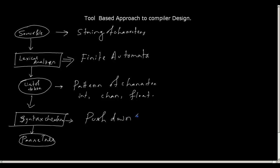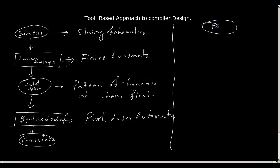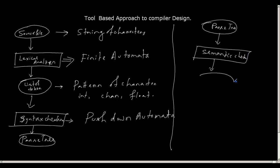As soon as you get a token, you know in which state you should be. We will discuss this further after the lexical analyzer topic. From the parse tree, the third stage is what we call the semantic checker. After the semantic checks, we create a structure called a decorated parse tree.